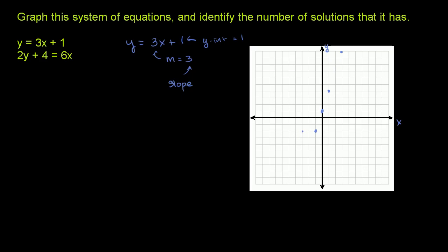If we went negative 2 in x, we would go negative 6. 1, 2, 3, 4, 5, 6 in y. So these are all points along the line. And I can connect the dots now.